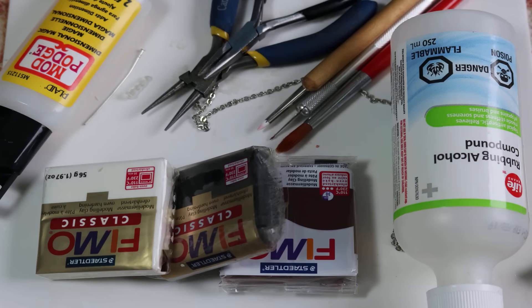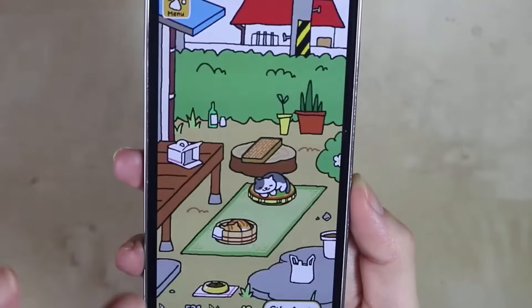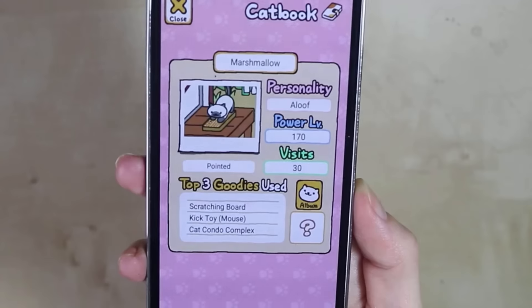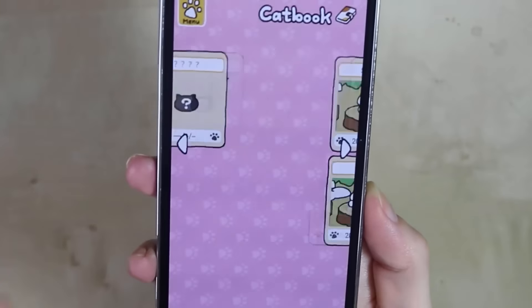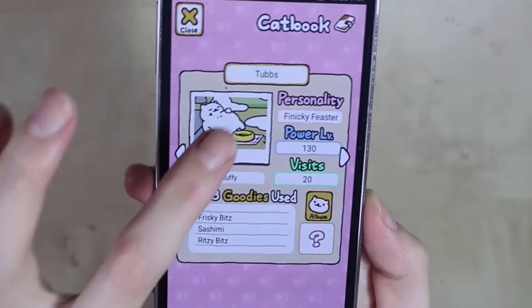So here are all the tools, and I'll leave them in the description box below. So this is what the game looks like, and there's Marshmallow. But today we'll be looking for Tubbs. There he is.